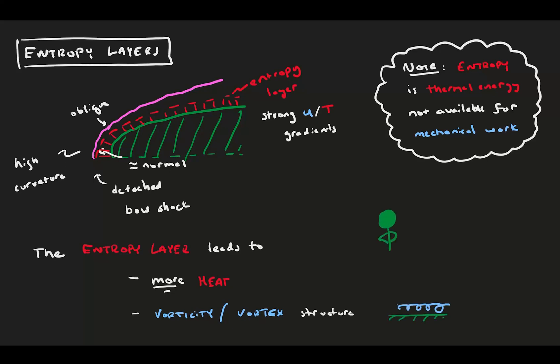So, in hypersonic flows, we have our velocity boundary layer, our thin shock layer, and an entropy layer to worry about, all of which interact in complicated ways.